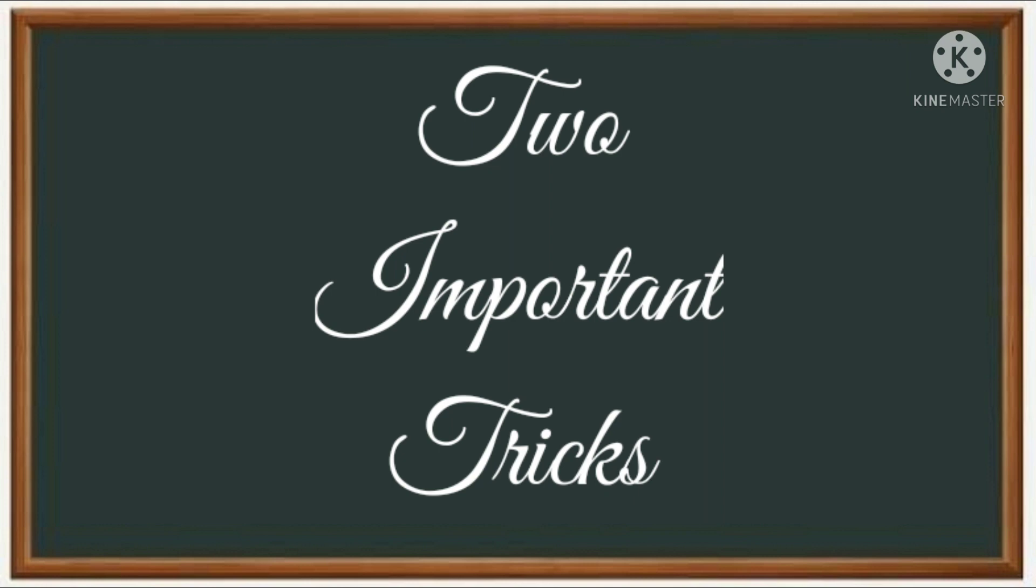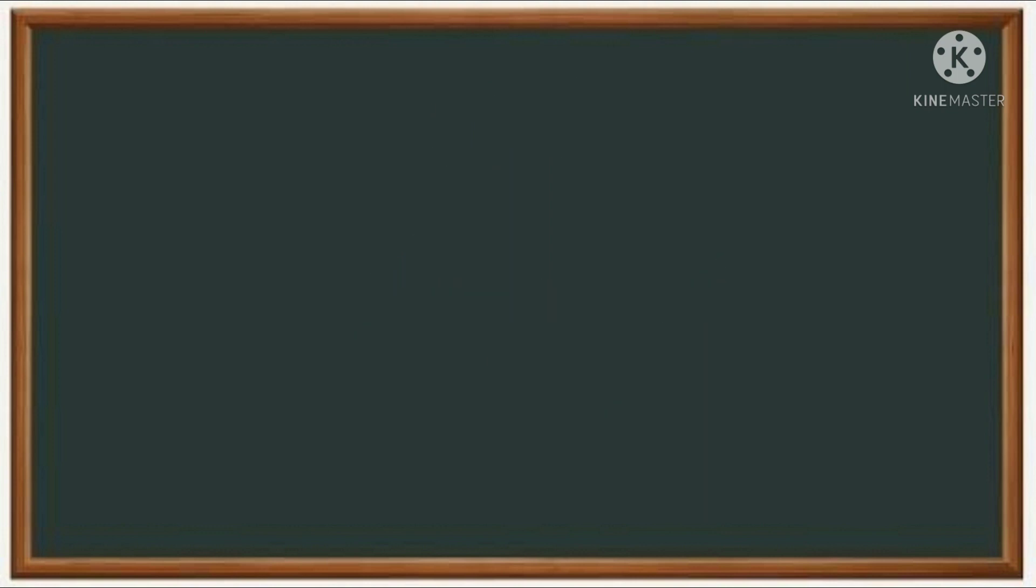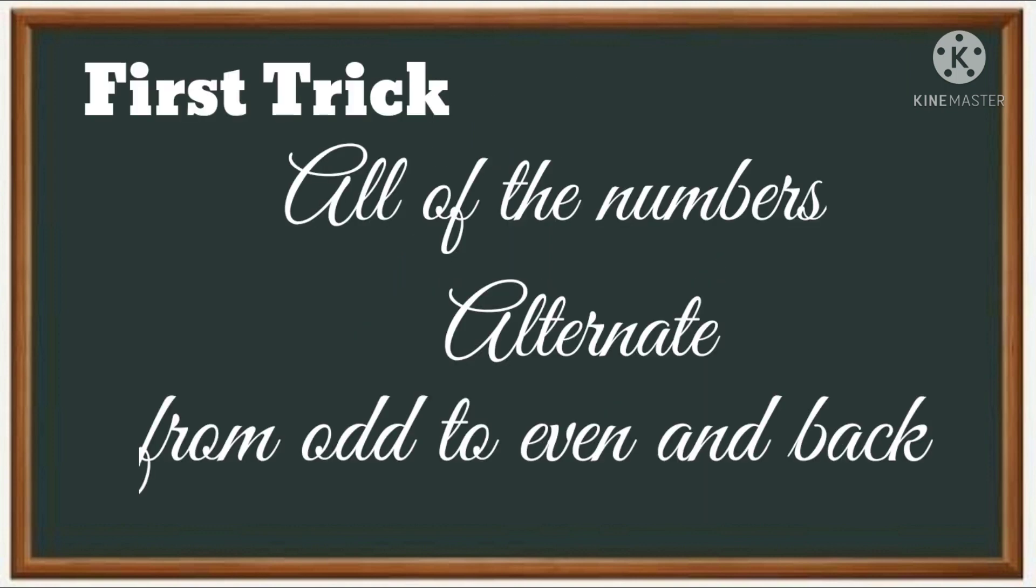I'm going to teach you some important tricks that you can use in even and odd. Our first trick: all of the numbers alternate from odd to even and even to odd. I am going to show you. Here we go, we have first ten numbers.